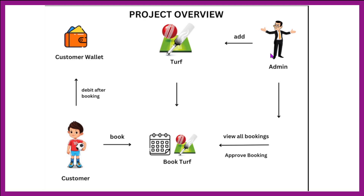Our project contains two modules: admin and customer. Firstly, admin will register and login into the system. After login, admin can add multiple turfs for different games like football, cricket, etc. After adding the turfs, customers will be able to see all the turfs on the website, click on them, and book a turf by selecting the booking date and time slot, but they must be logged in. If slots are available and not already booked, the booking will go through.